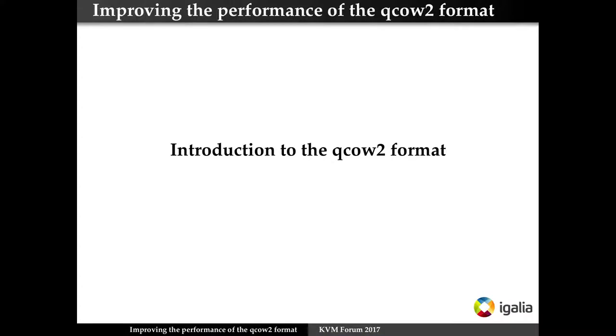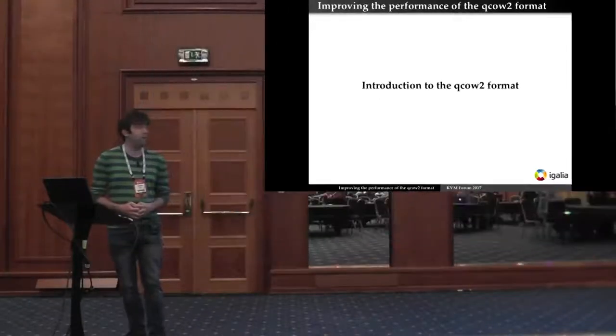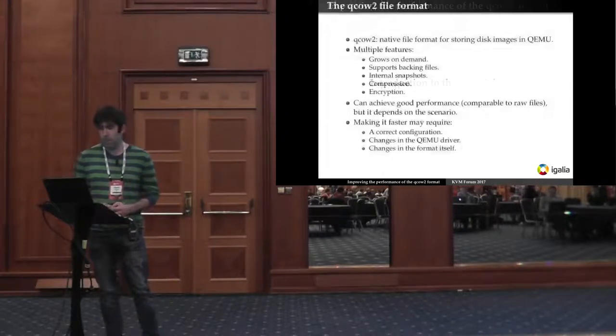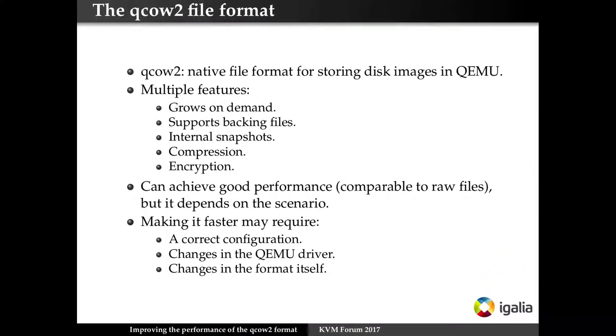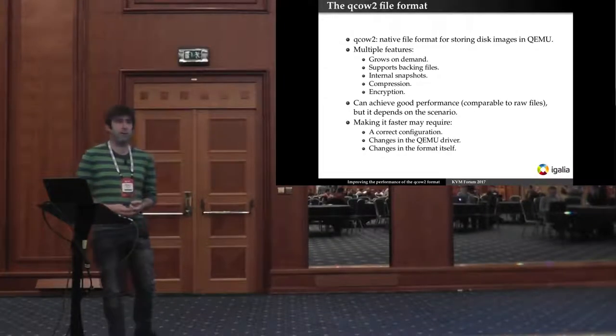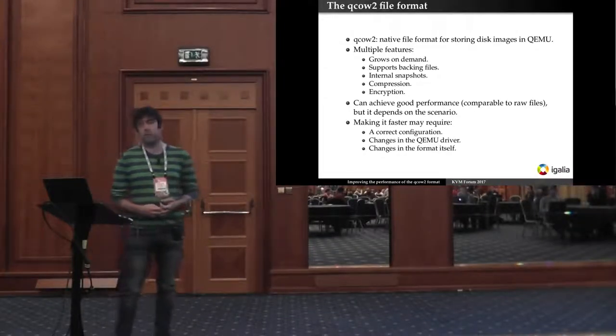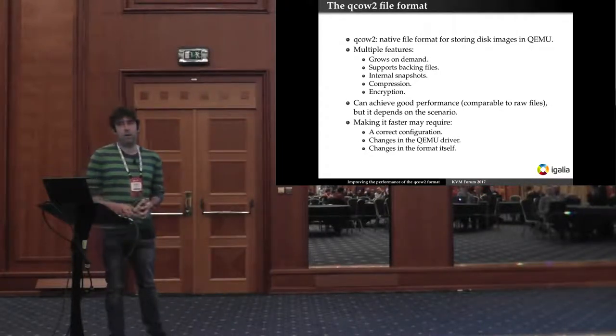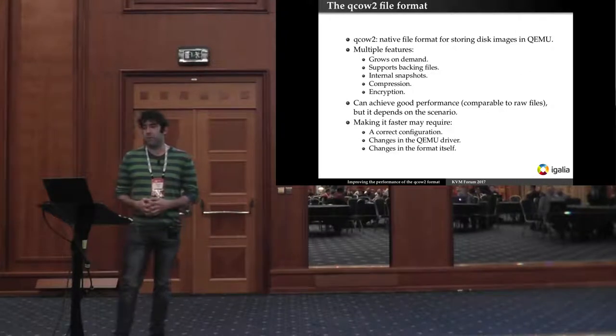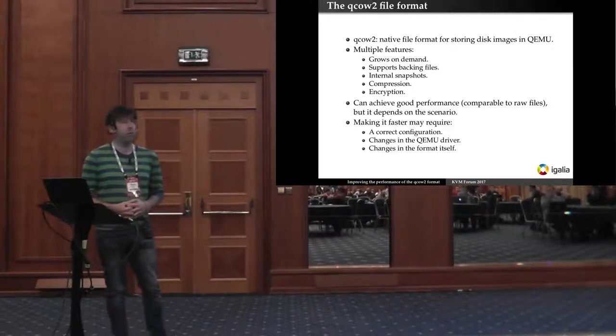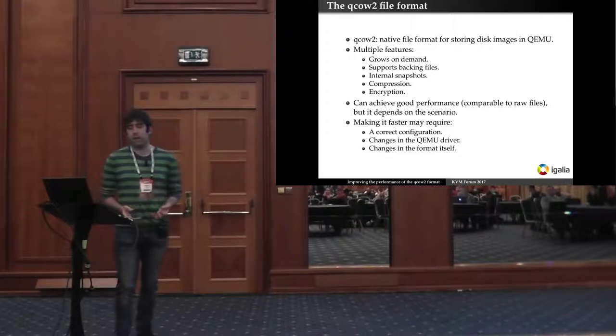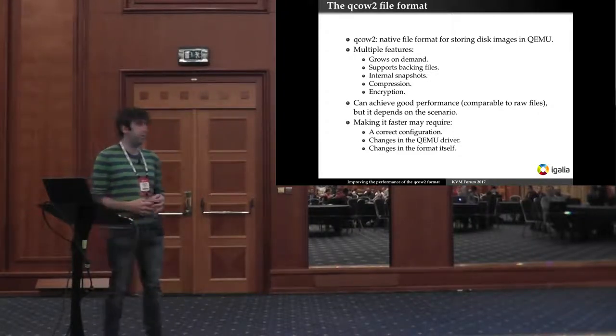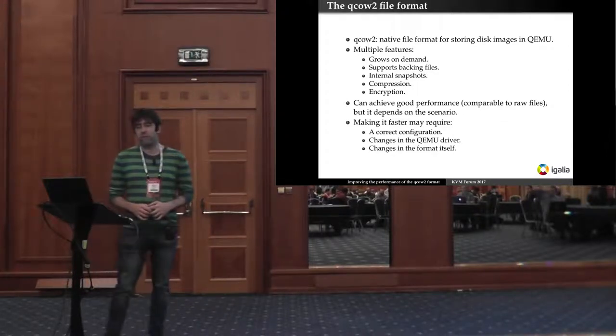So first I will start by giving a brief overview of the QCOW2 format. QCOW2 is the native file format used by QEMU for storing disk images. It has multiple features, can grow on demand, supports backing files, snapshots, encryption, compression, and under certain circumstances you can achieve performance comparable to that of raw files. However, that's not always the case. In this talk I will try to describe the problems that QCOW2 format has and some ways to improve this performance.